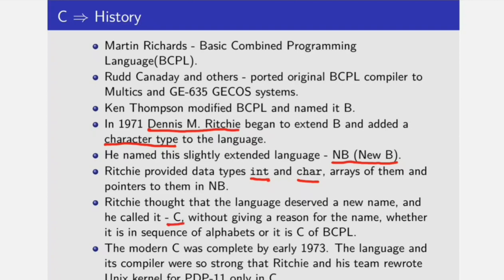He did not give any reason for the name, whether it was in sequence of alphabets — that is A, B, and then C — or this C was the C of BCPL. The model C was complete by early 1973. The language and its compiler were so strong that Ritchie and his team rewrote the entire Unix kernel for PDP-11 only in C.